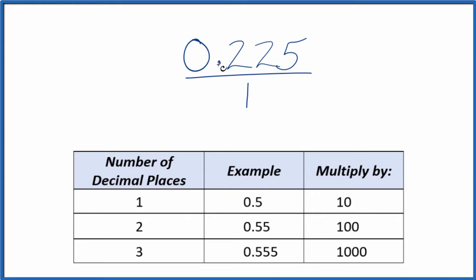Next I can see I have 1, 2, 3 decimal places. When I have three decimal places, I'm going to multiply this by 1,000. So when I multiply this by 1,000, 1,000 times 0.225, that's 225. So now I have a whole number.